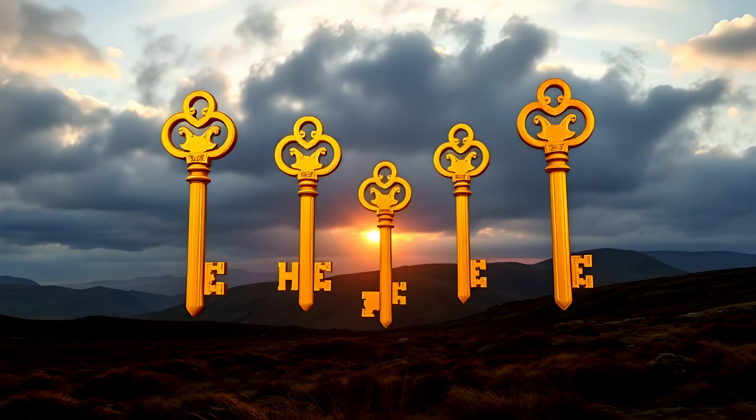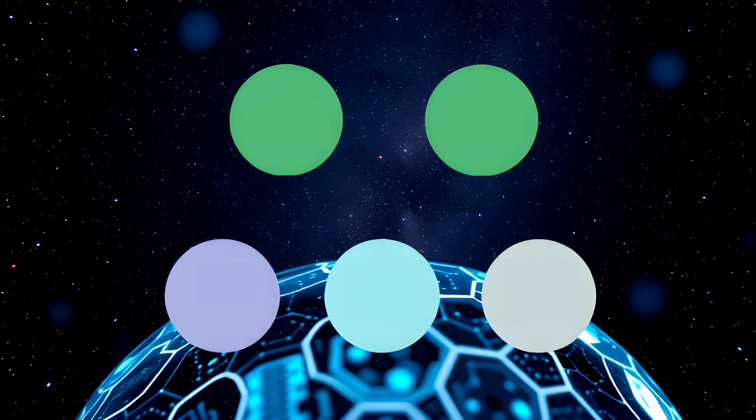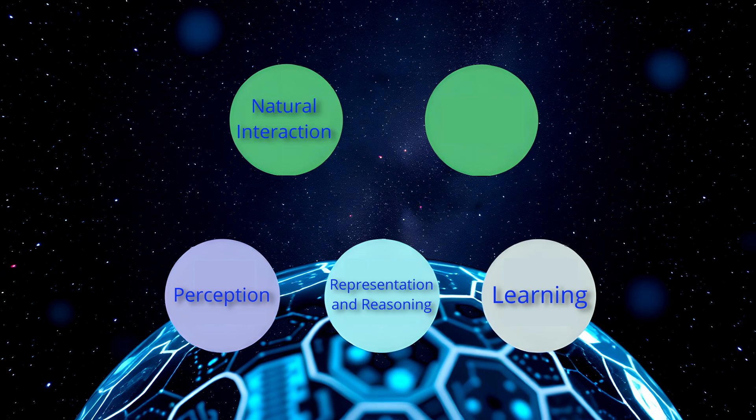Today we will explore five key areas where artificial intelligence is significantly impacting our lives. These areas are perception, representation and reasoning, learning, natural interaction, and finally societal impact.